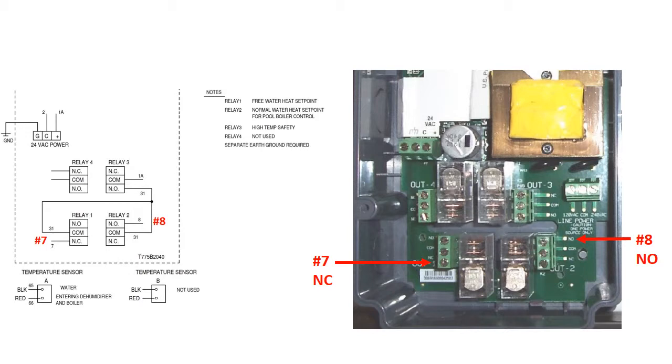Relay 1 is programmed for cooling, and when the free heat set point is reached, the relay will energize, the normally closed contact will open, and no more heat will be added to the pool water.